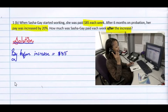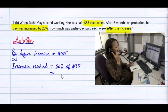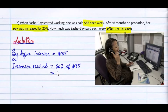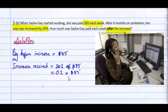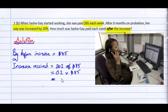Now we want to calculate her increase, which was by 20%. And so that is 20% of $85. We know that 20% is 20 divided by 100, which is the same thing as 0.2, multiplied by 85. And using our calculator, that gives us 17.